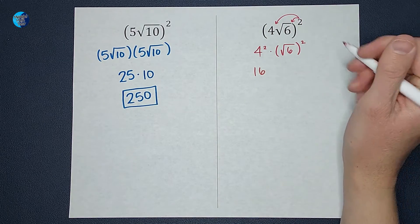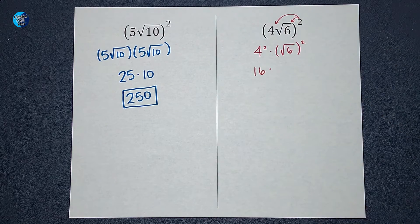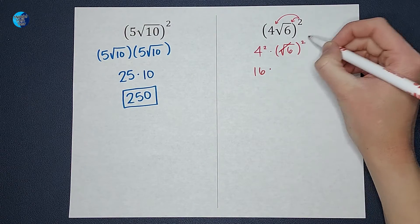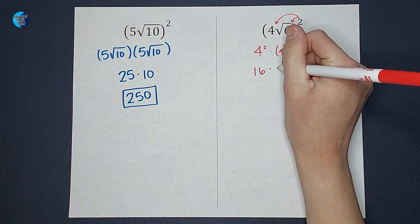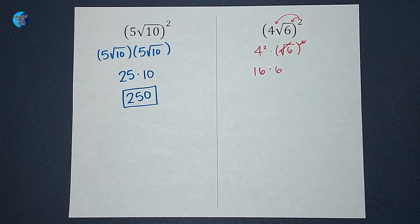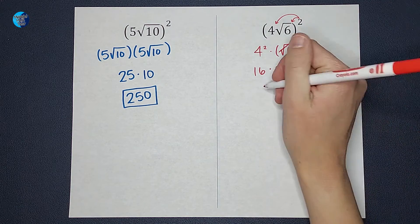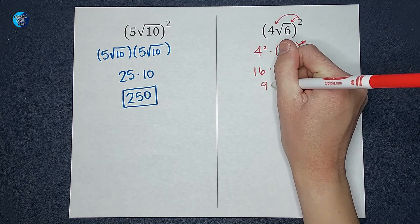Times (√6)², which is when the square root and the squared cancel each other out, and it ends up just being 6. So then I have 16 times 6, which gives me 96.